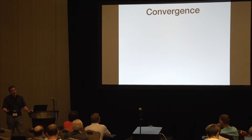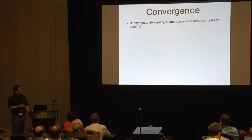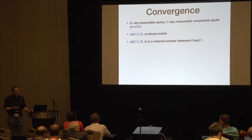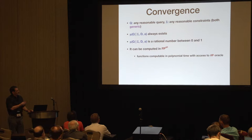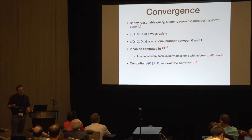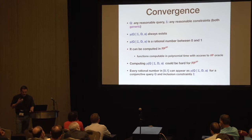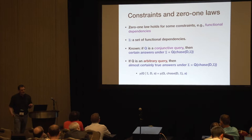What do we know about this? The 0-1 law fails, but the best thing we get is convergence. For any generic query and any generic set of constraints, this limit always exists — it is a rational number between 0 and 1. We can compute this limit in the class FP^{#P}, which is functional polynomial time with #P oracles. Computing it could be hard for this class under reasonable notions of hardness for functional classes. Also, every rational number in [0,1] can appear this way, even when Q is conjunctive and sigma contains just inclusion constraints.